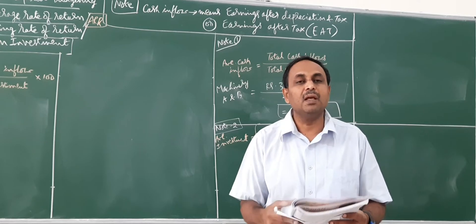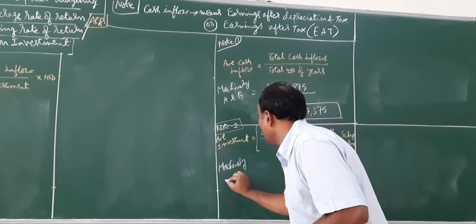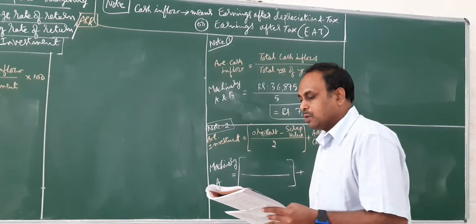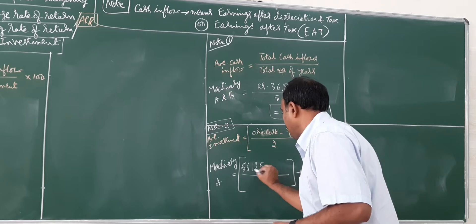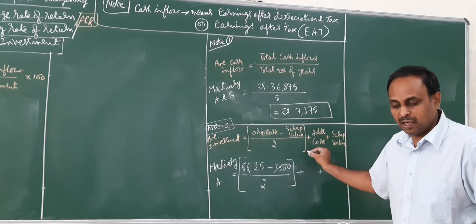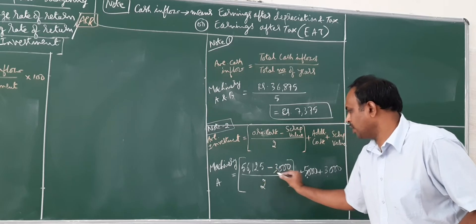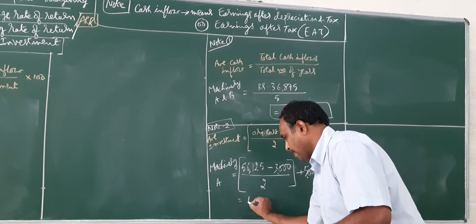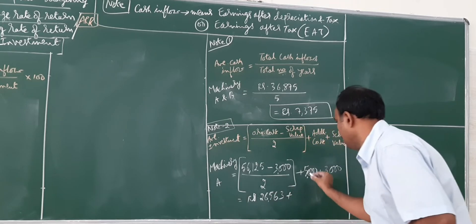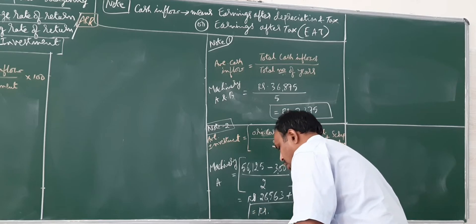Next, I'll go for the calculation of average investment. First I'll go for machinery A. Both A and B is different because we have here the additional cost as well as the scrap value. So original cost 56,125 minus the scrap, scrap is 3,000 rupees, divided by 2. Then additional cost, extra investment, this is 5,000 for A. And again scrap is 3,000. First we have to minus 56,125 minus 3,000 divided by 2. We are going to get a value 26,562.5, then this 5,000, then this 3,000.